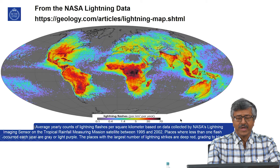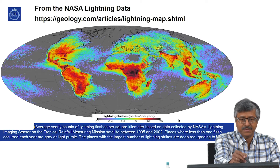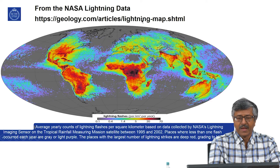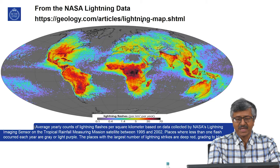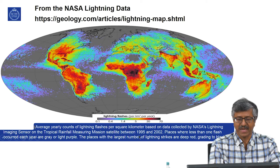Now if you look at how prevalent lightning is around the world, you can look at this map of lightning data from NASA. This is from NASA's lightning imaging sensor on the Tropical Rainfall Measuring satellite between 1995 and 2002, so this is average data.